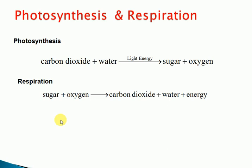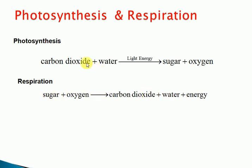Photosynthesis and respiration: photosynthesis combines carbon dioxide with water in the presence of sunlight with chlorophyll, converting carbon dioxide into sugar plus oxygen. Sugar is stored in the form of glycogen in our body. This is stored through photosynthesis in green plants. Photosynthesis and respiration are essentially reverse processes of one another.